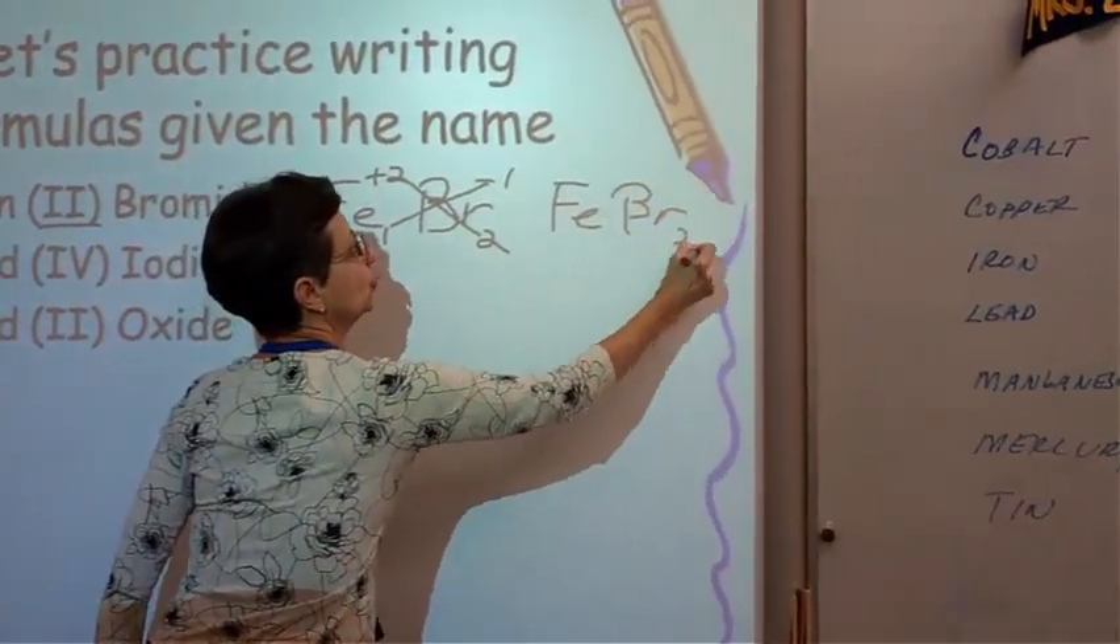But we're going to crisscross them. And I'm not going to bring down the charge. I'm only bringing down the number. If it's 1, it's understood. We don't have to write it. And we're bringing down this 2. So we crisscross this way. So I can rewrite it as FeBr2. And I'm done. That's my formula.